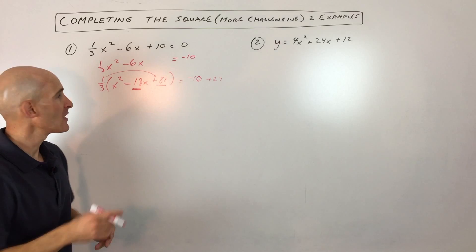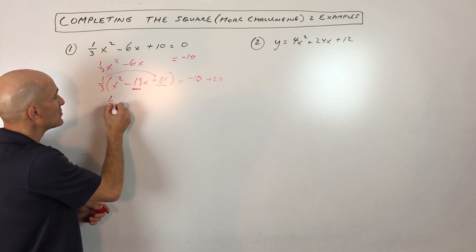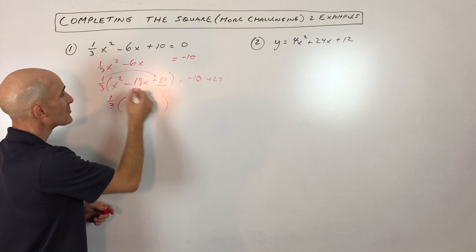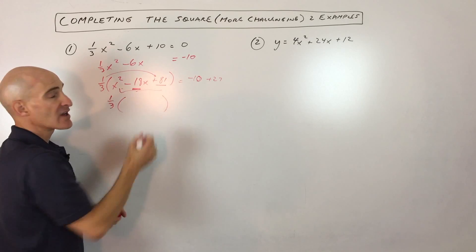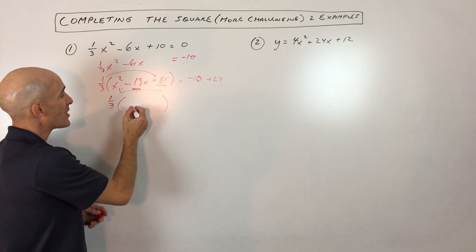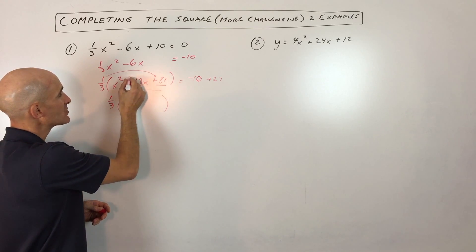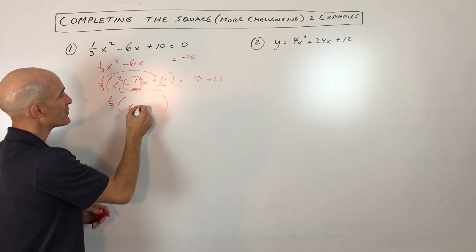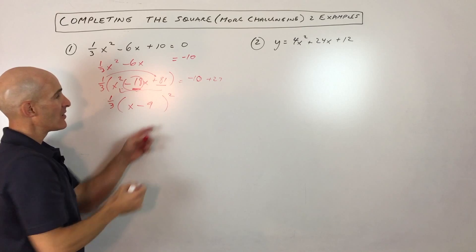So you're with me so far? The next step is you want to factor this trinomial. Now because you're doing this technique of completing the square, this is going to be a perfect square trinomial. It's going to be x and it's always going to be half of this middle coefficient. So it's x minus 9, the quantity squared.